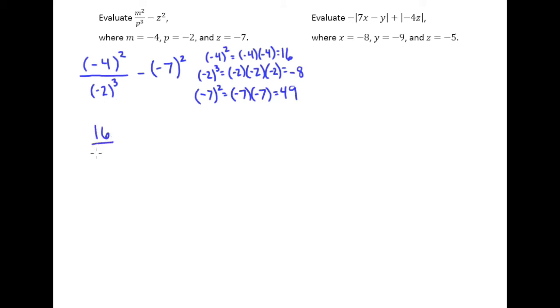And so in the next step here, I have 16 divided by negative 8 minus positive 49. Now, out of what's left here, we know division comes before subtraction, so 16 divided by negative 8 is negative 2. And then we have our minus 49.